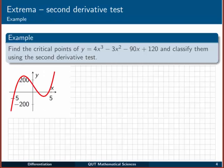Let's check out an example. Find the critical points of y = 4x³ - 3x² - 90x + 120 and classify them using the second derivative test. To find critical points, we need to find the derivative dy/dx.